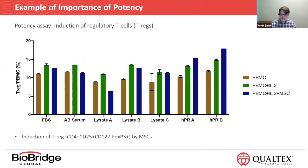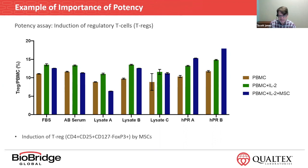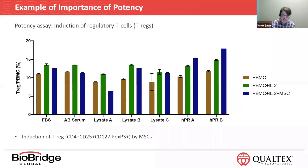We took the same cells and performed a potency assay on them, looking for their ability in this case to induce T regulatory, or T reg, cells from those PBMCs. So instead of just looking for expansion of PBMCs, we're looking at the presence of a specific immune cell — the T reg cell. This is using MSCs from three different donors and performed multiple times.